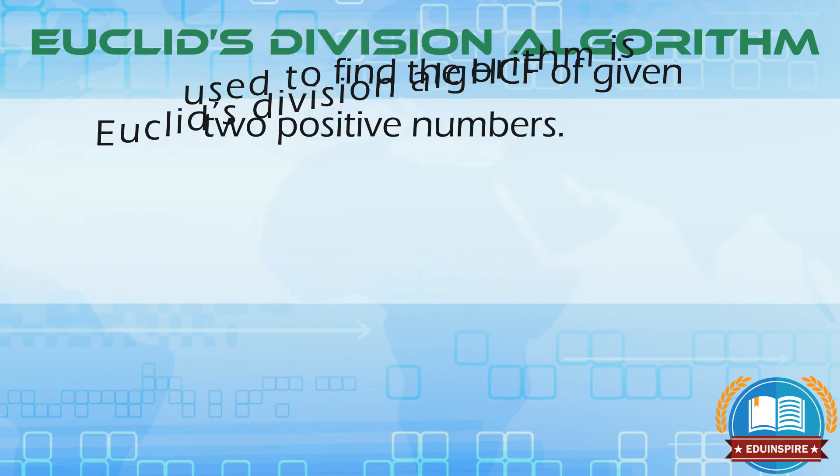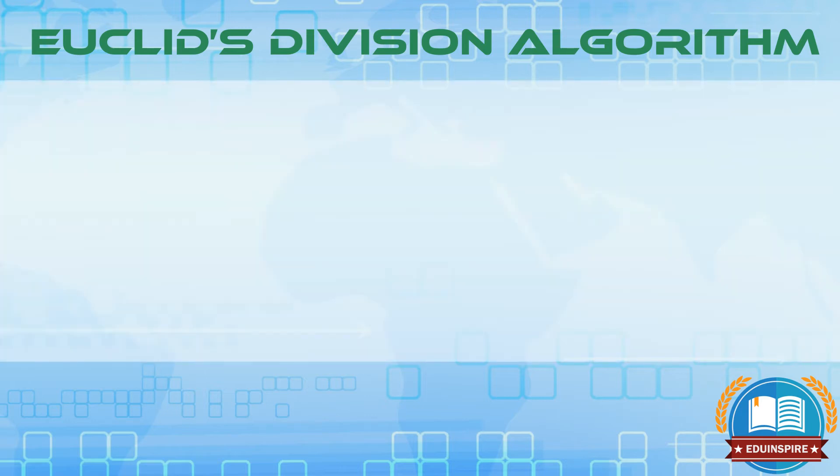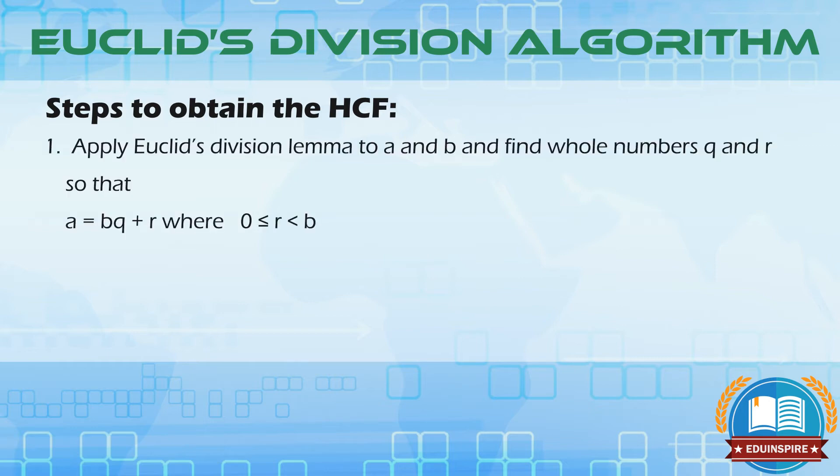Euclid's division algorithm is used to find the HCF of given two positive numbers. Before we go through the examples, let's understand the algorithm in order to obtain the HCF of two positive integers a and b with a greater than b.